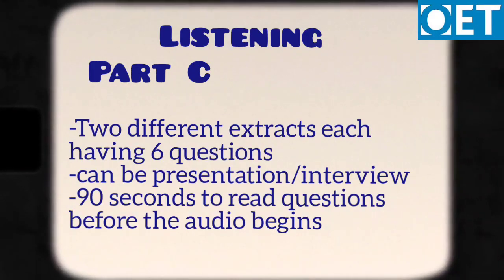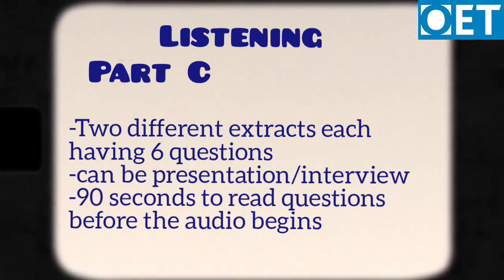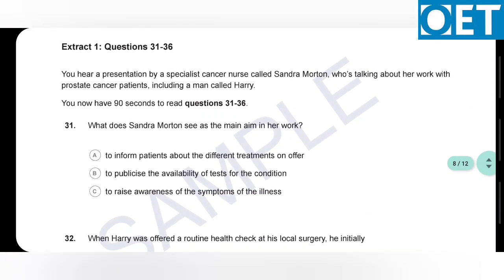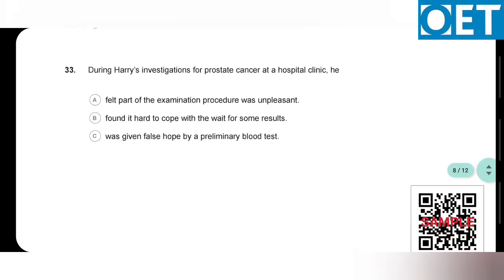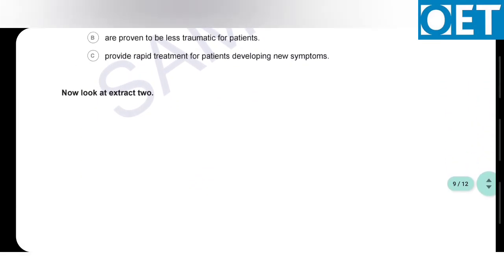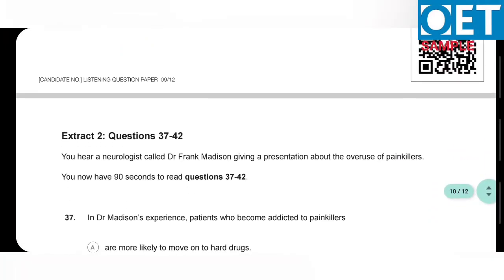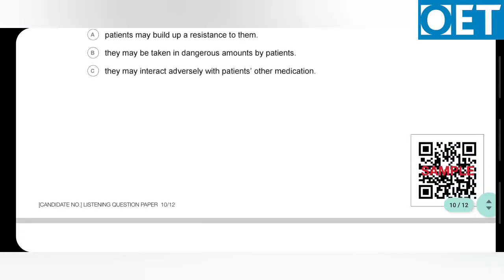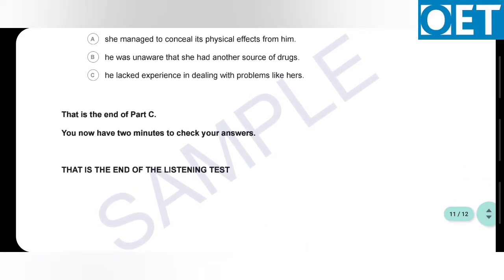Listening part C has two extracts on general healthcare topics, and each extract has six questions. The extract can be a presentation or an interview. You will get 90 seconds to read the questions before the extract starts. After reading questions 31 to 36 in 90 seconds, you will hear the audio and answer as you listen. After completing extract one, you proceed to extract two in the same manner. Once you complete part C, you will get two minutes to check your answers.